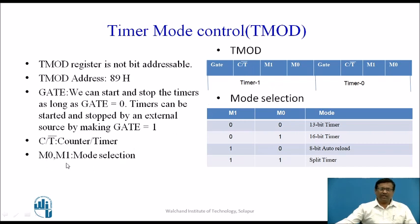M0 and M1 are mode selection bits. There are four possibilities with two bits. When M1, M0 are 0, 0, we use it as a 13-bit timer. When it is 0, 1, we are using a 16-bit timer. When it is 1, 0, it is 8-bit auto-reload. And when it is 1, 1, it is a split timer.